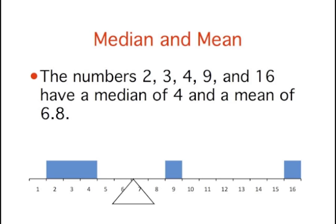To see this in action, let's apply these principles to a set of 5 numbers: 2, 3, 4, 9, and 16, with their median of 4 and their mean of 6.8. You can see that the distribution indeed balances at the mean of 6.8 and not the median of 4.